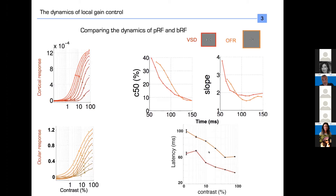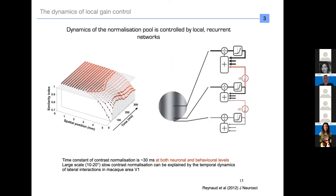Comparing the parameters from voltage-sensitive dye imaging in red and ocular following in orange, you see that the parameters have the same temporal dynamics, though not the same absolute values, which makes sense. The V1 response is always 20 to 30 milliseconds before the ocular following response, but they change accordingly. To summarize, what we call contrast gain control — how the system sets its sensitivity — could be explained by a local cortical mechanism involving lateral interactions, where signals from the periphery propagate toward the center to normalize activity.